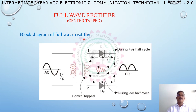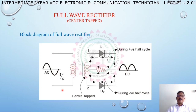Block diagram of full wave rectifier. The AC input is given to the center tap transformer. In a normal transformer, there are two input terminals and two output terminals — a primary winding and a secondary winding. But in a center tap transformer, an additional terminal is connected at the middle of the secondary winding, giving three output terminals.